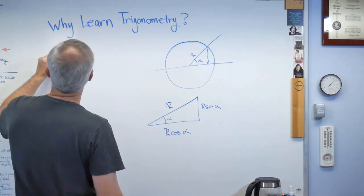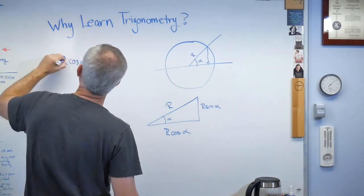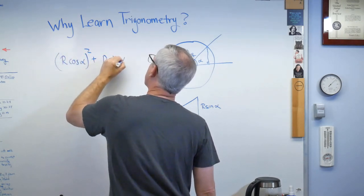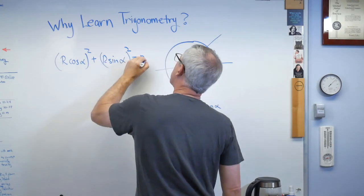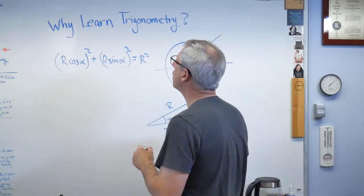Okay? That means r cosine alpha squared plus r sine alpha squared has to equal r squared. Alright? That's just the Pythagorean Theorem.